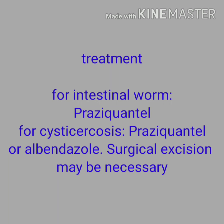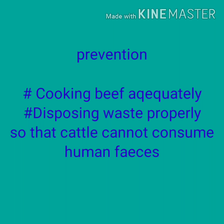For treatment, when there is only adult worm in the intestine, praziquantel is used and is very effective against the adult worm. In the case of larval stage or cysticercosis in tissue, praziquantel as well as albendazole can be used. Sometimes surgical excision may be necessary for removal of the cyst from specific tissue.